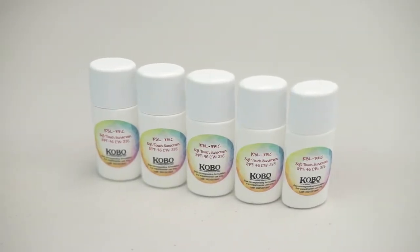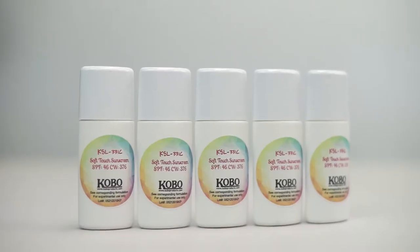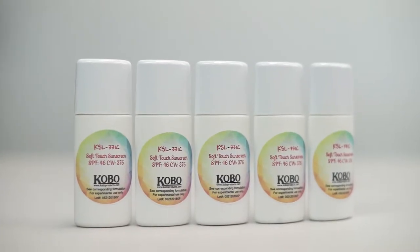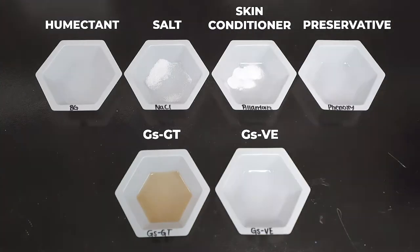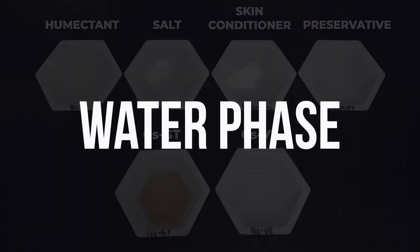Today we are going to show you how to make a high SPF minimal whitening sunscreen formula featuring Kobo's titanium dioxide and zinc oxide dispersions. These dispersions are only two of many of the different mineral sunscreen ingredients that Kobo has to offer.